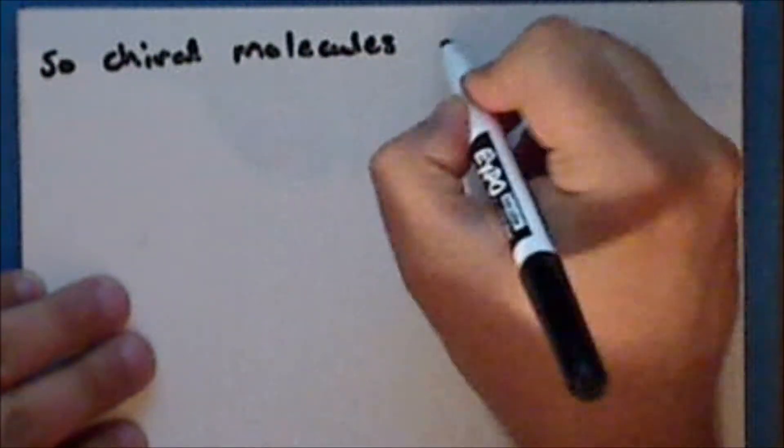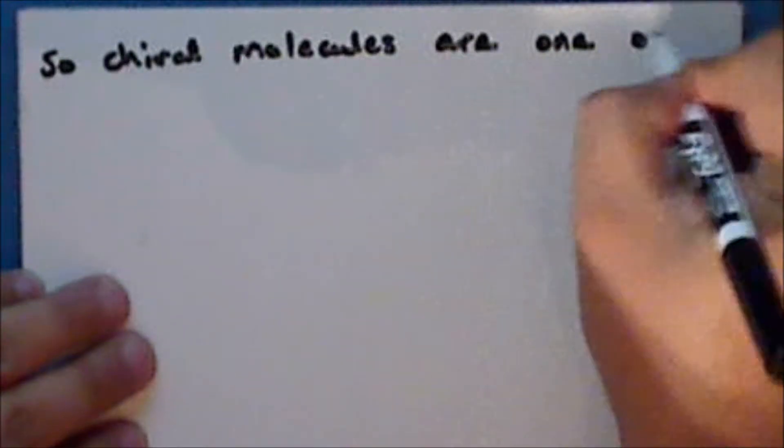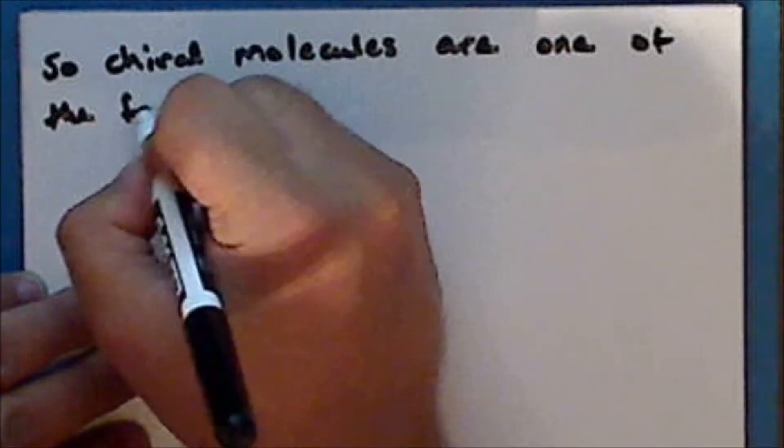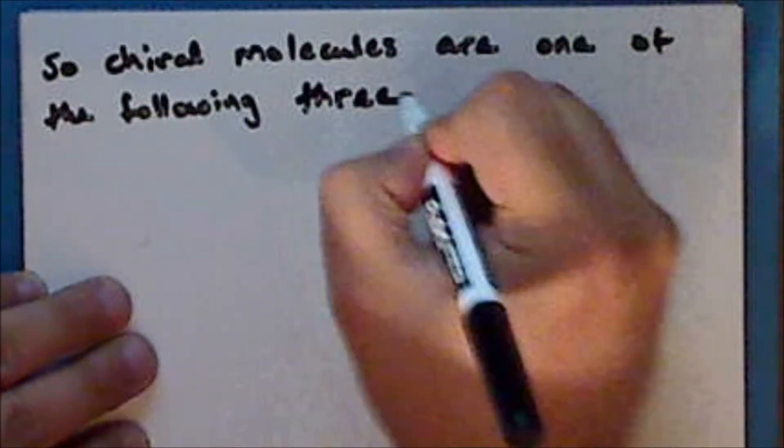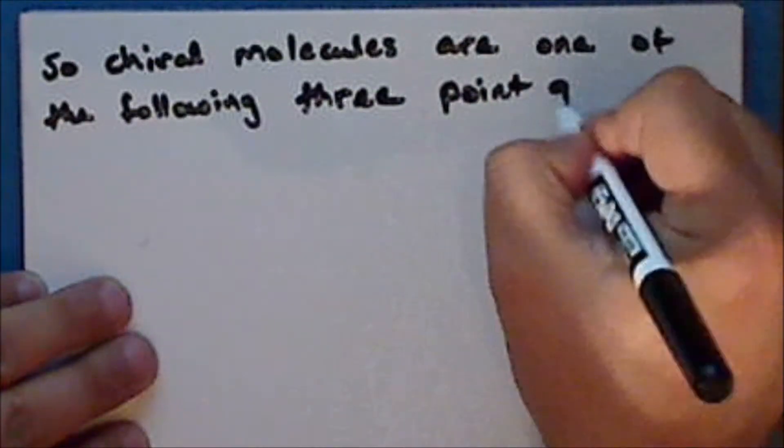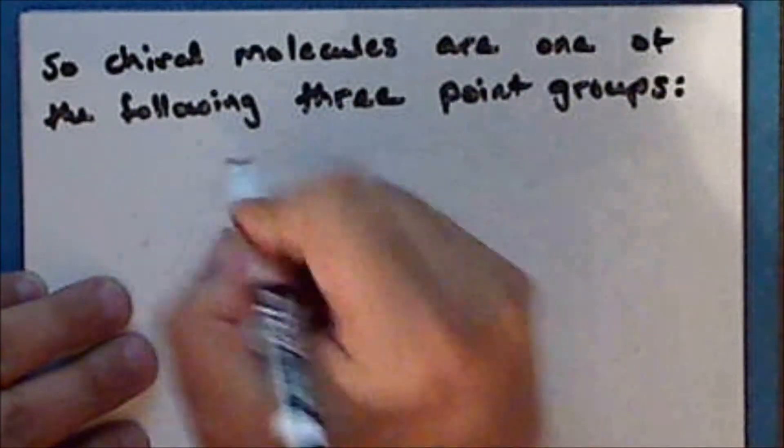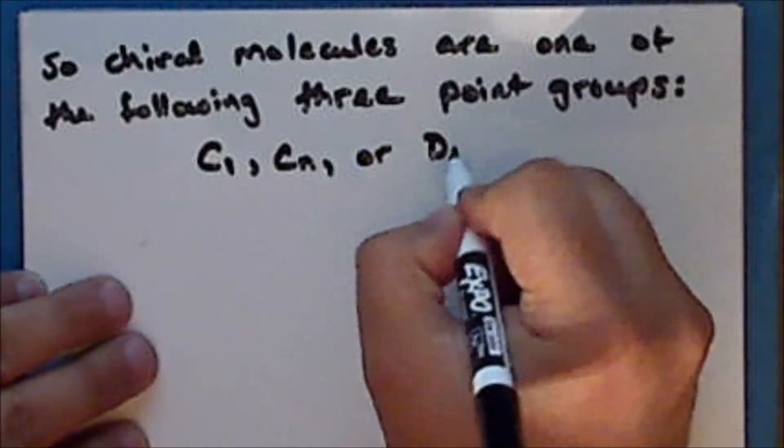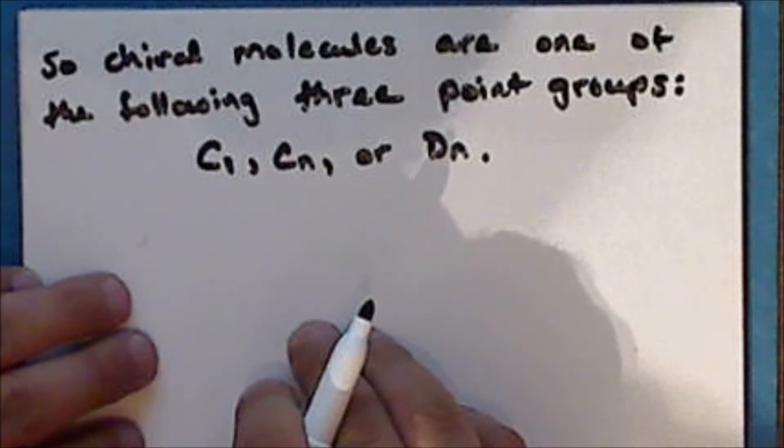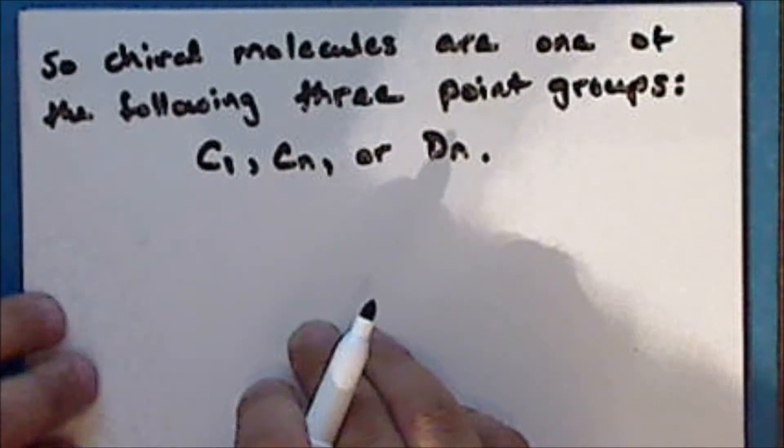And so chiral molecules are one of the following three point groups, C1, Cn, or Dn. Now, after we study matrices, we will look at how point groups are used to predict which atomic orbitals contribute to bonding.